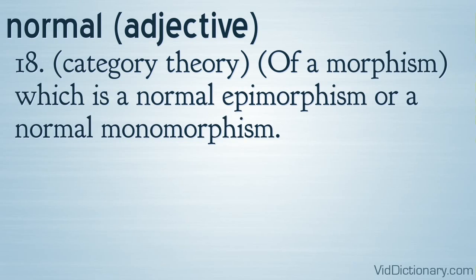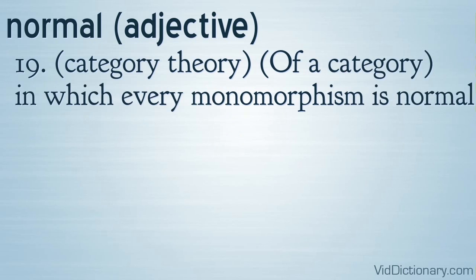Definition 18: Category theory — of a morphism, which is a normal epimorphism or a normal monomorphism. Definition 19: Category theory — of a category, in which every monomorphism is normal.